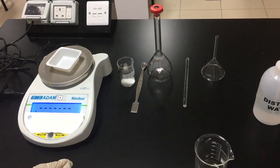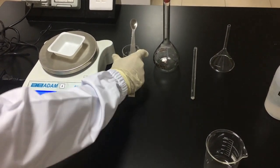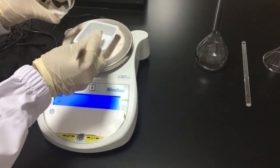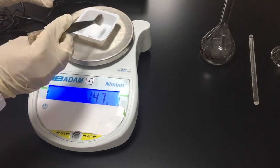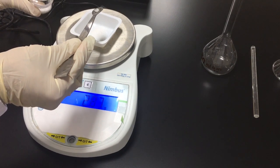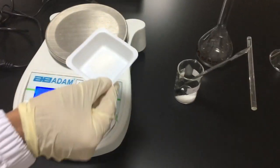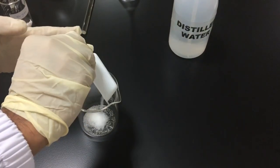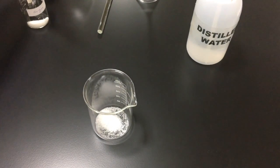Put the weighing bottle on the balance, then press the button TAR to set the value at zero, so the mass of the weighing bottle won't be included. By using a spatula, weigh 2.24 grams of sugar. Transfer the sugar to the beaker and rinse the weighing bottle for many times in order to collect the whole mass of sugar.